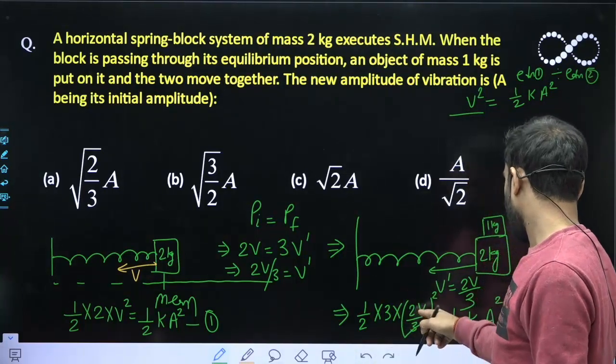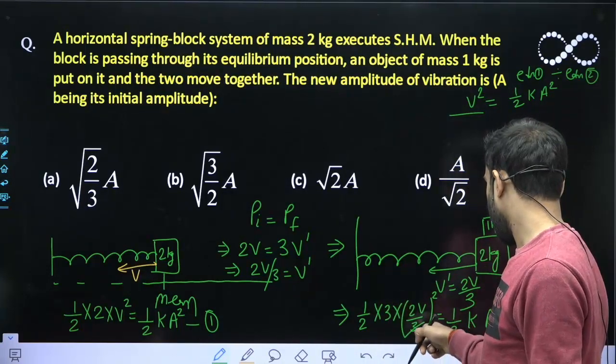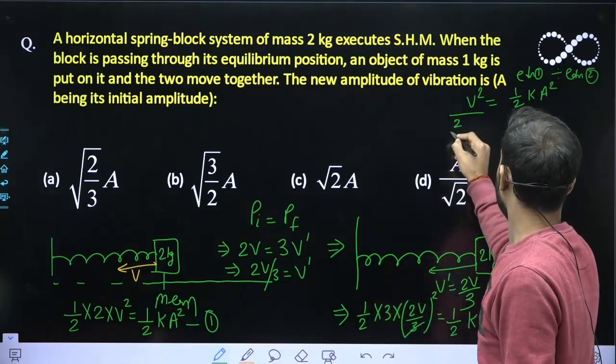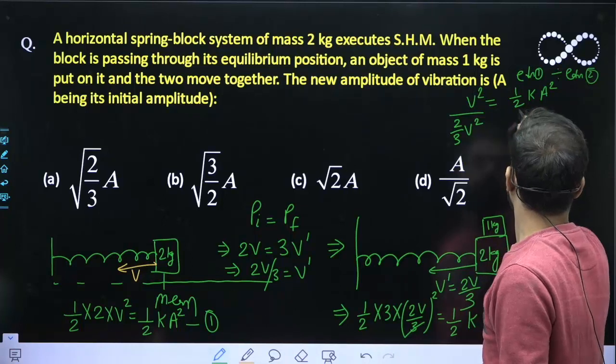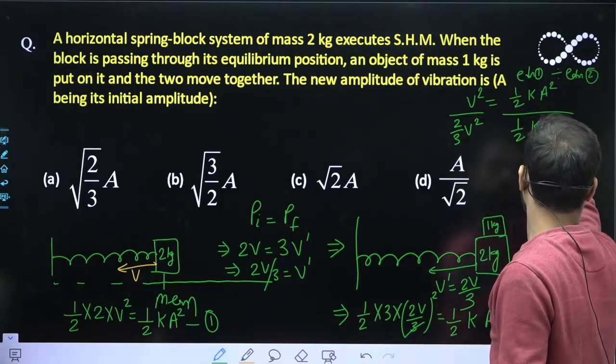If you solve this, this is 2A square, so 2 will get cancelled out, and this is 3A square, so 3 will also get cancelled out. This will become 2 by 3 V_A square. So that will become 2 by 3 V_A square and here you will get 1 upon 2 K A square.